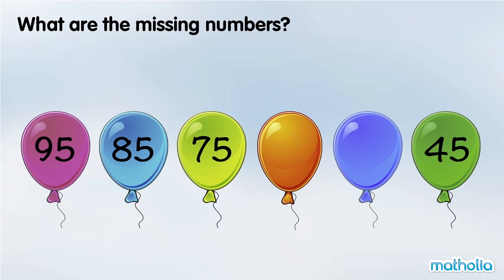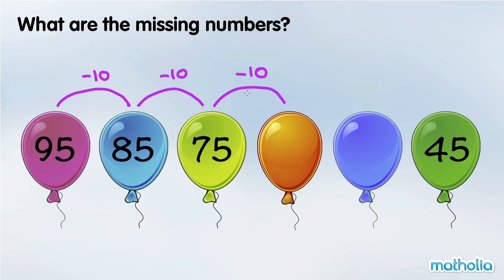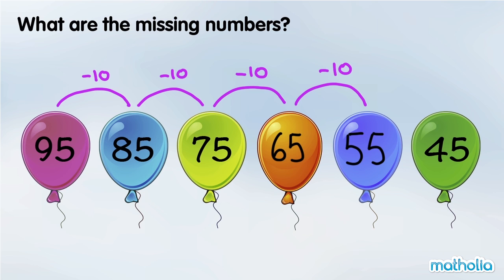What are the missing numbers? 95 minus 10 is 85. 85 minus 10 is 75. In each step the numbers go down by 10. 75 minus 10 is 65. 65 minus 10 is 55. The missing numbers are 65 and 55.